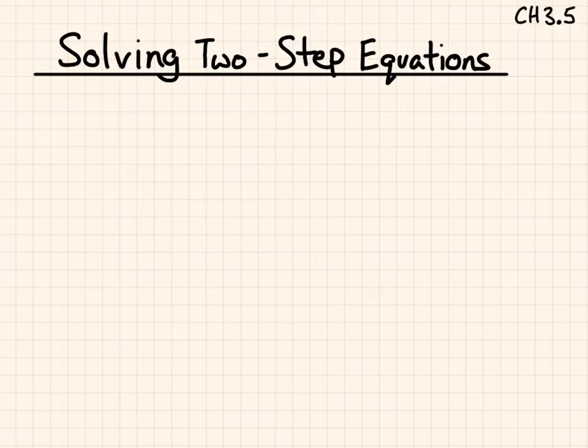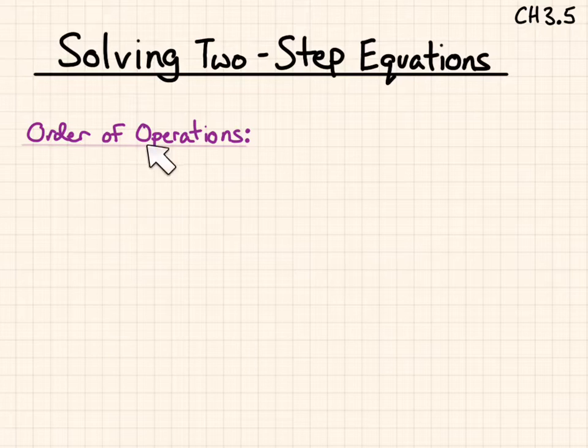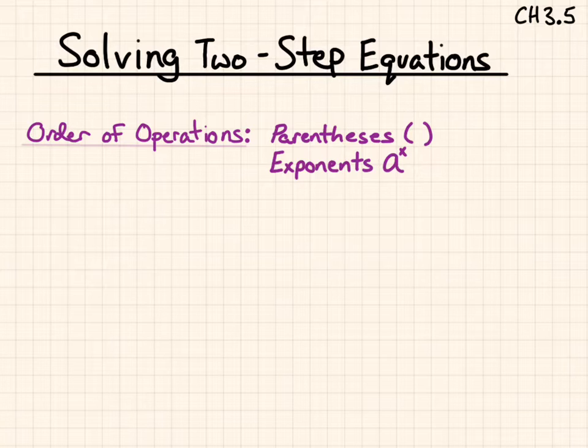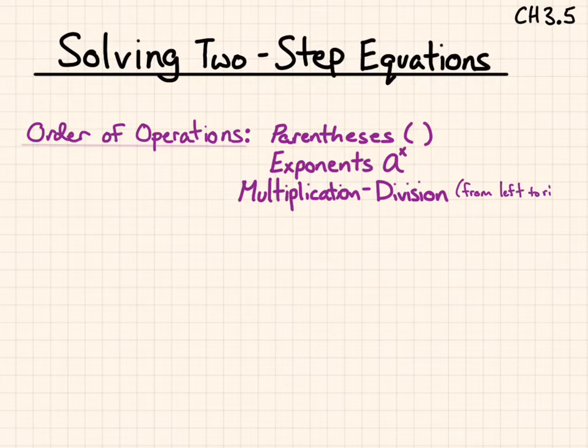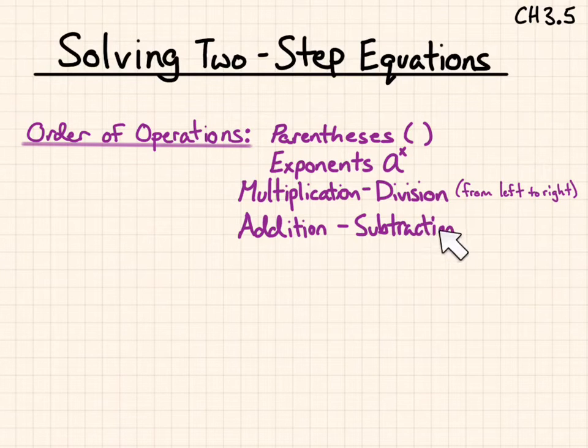When solving two-step equations, there's two different steps. You need to figure out which one to do first. So we need to look at our order of operations to determine which one's going to go first and which one's going to go second. Order of operations goes parentheses first, exponents second. Multiplication and division are at the same level, read from left to right. Addition and subtraction are equals as well, read from left to right too.